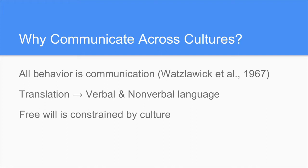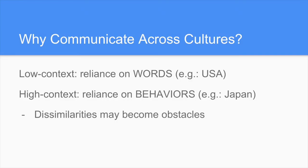Entering the first chapter — why communicate across cultures — we may remember Slatsky et al.'s 1967 statement that all behavior is communication, and vice versa, all communication is behavior. We can never stop behaving, we can never stop communicating; we are doing it continuously and permanently. Therefore, translators need to know about the verbal and nonverbal dimensions of language. Culture additionally restricts the free will not only of the speaker but of the individual. We must make the necessary distinction between low-context and high-context cultures: the first relies on words, for example the USA, while the second relies more on behaviors or the nonverbal side of communication, such as Japan and Mexico.